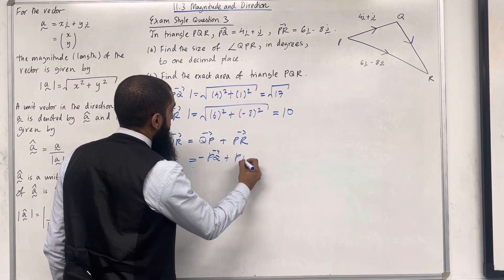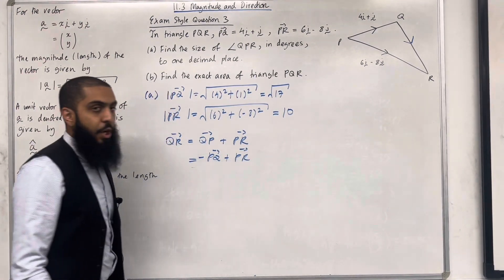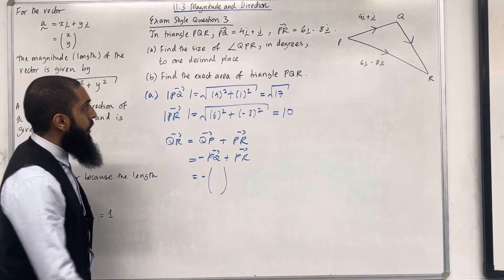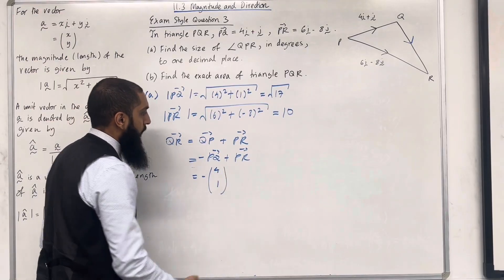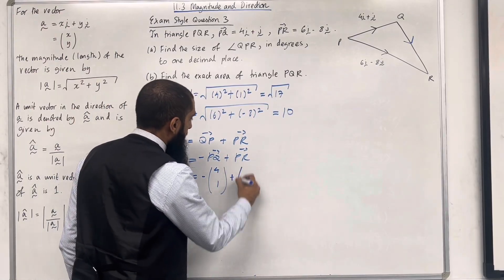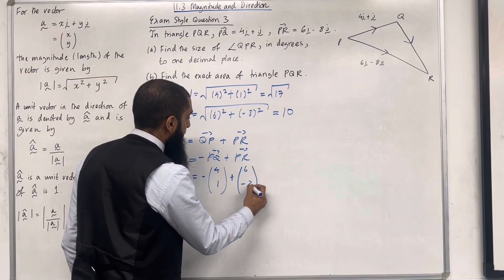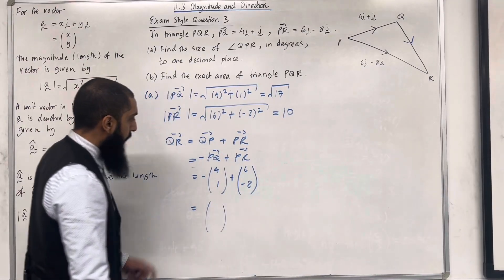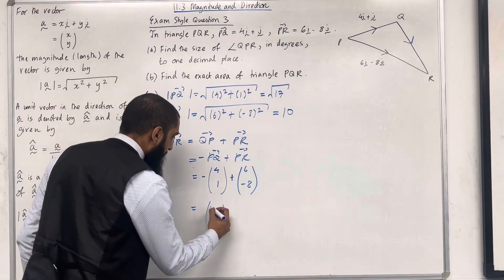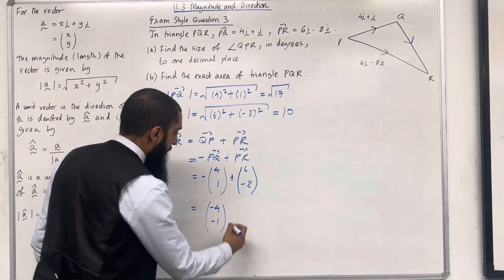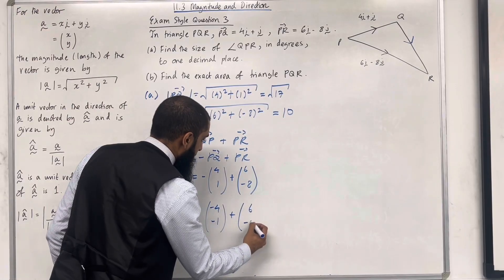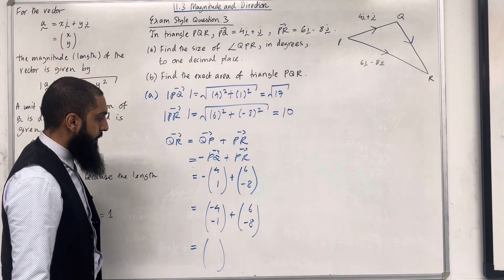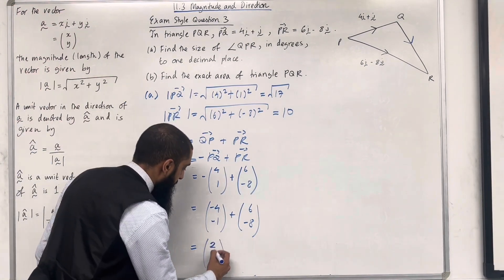Vector QR = −(4, 1) + (6, −8) as column vectors. Multiplying (4, 1) by −1 gives (−4, −1). Adding (−4, −1) and (6, −8) gives (2, −9).